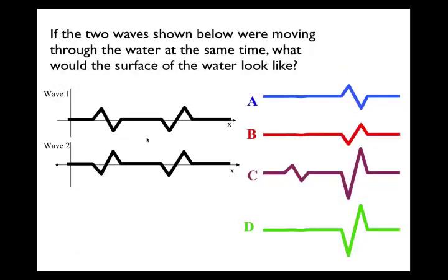If you have two waves moving through water at the same time, what would the surface look like at this instant? On the left, one wave goes above then below equilibrium while the other goes below then above — so those portions cancel. On the right, both go below then above together — so they add to make greater displacement. The correct picture is D, where the left pulses cancel and the right pulses add to even greater amplitude.